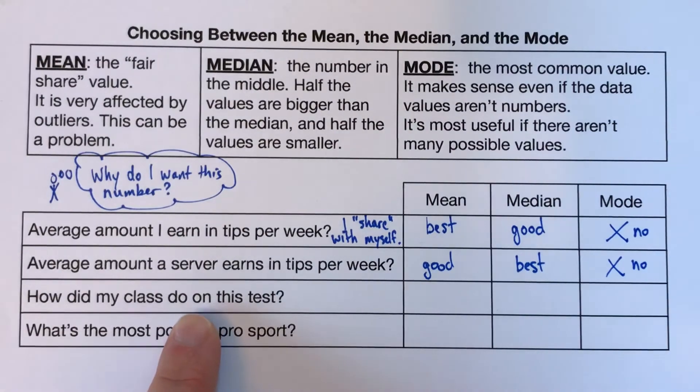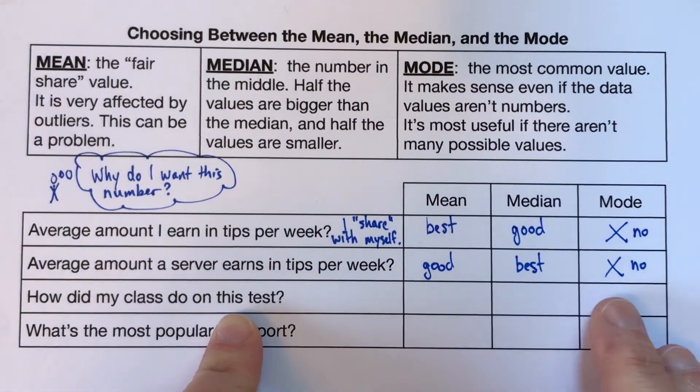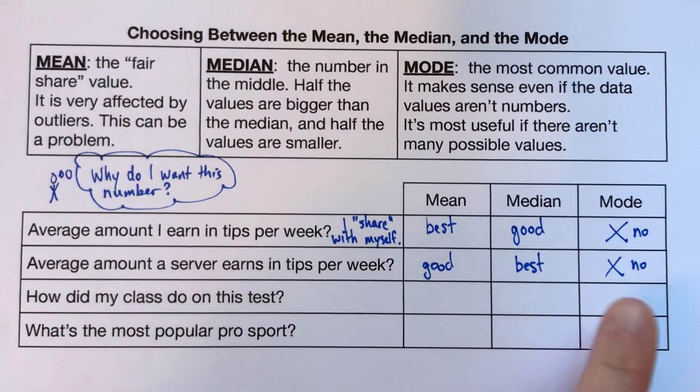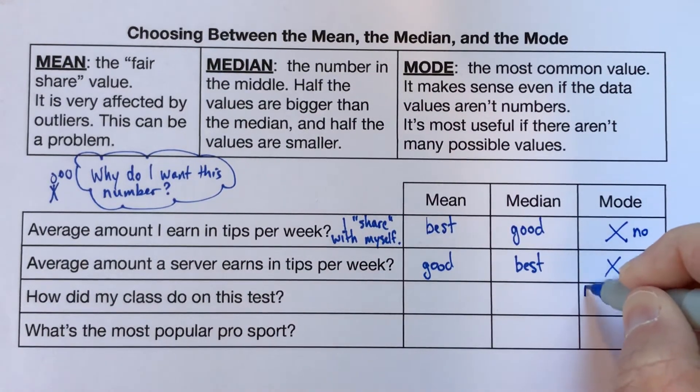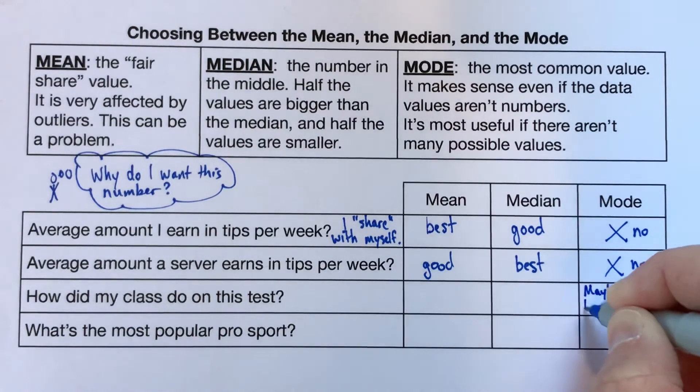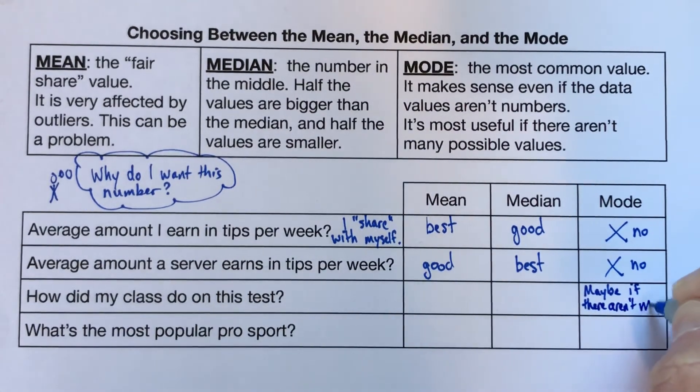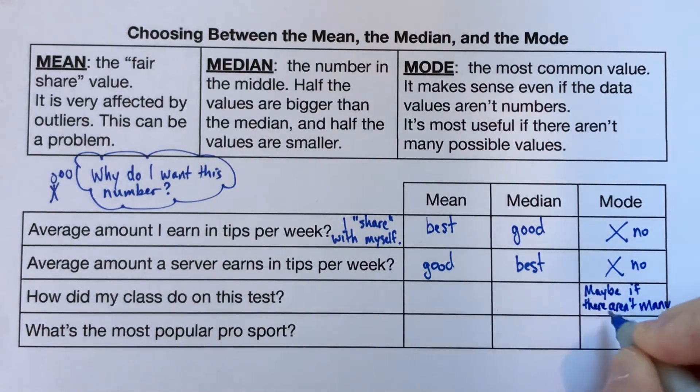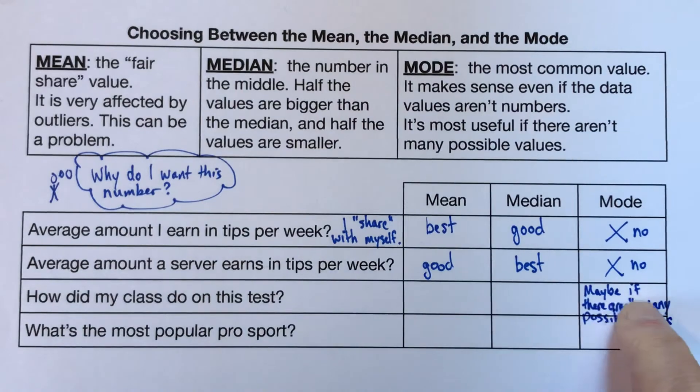Next example, how did a class do on this test? I want to talk about the mode first again. And I think whether the mode is a good answer depends a lot on what the grades look like. For example, I know sometimes some teachers grade out of four, so the possible options are one, two, three, and four. In that kind of case where there aren't very many options, I think the mode would be really good. So let's put maybe. If your possible grades were A, B, C, D, F, maybe, then the mode might also be really good. I'm going to write maybe if there aren't many possible grades. But if it was out of 100, especially if you could get half points, so if there were like 200 different possible options, I think the mode wouldn't necessarily be very meaningful.